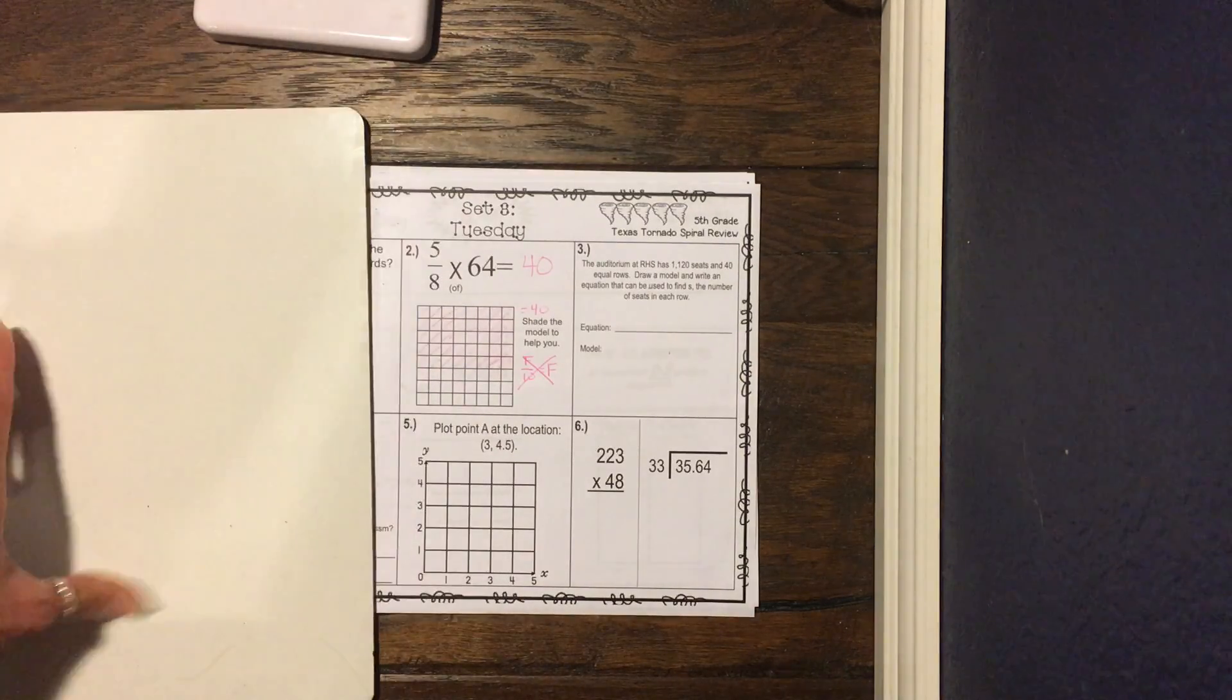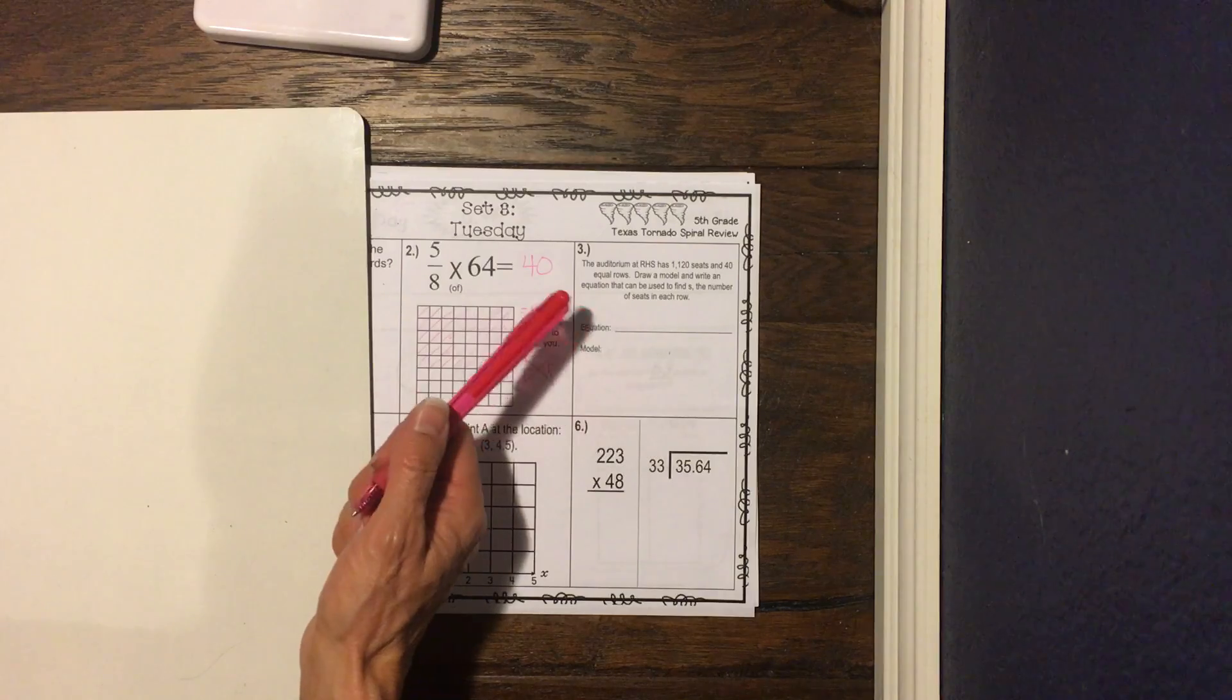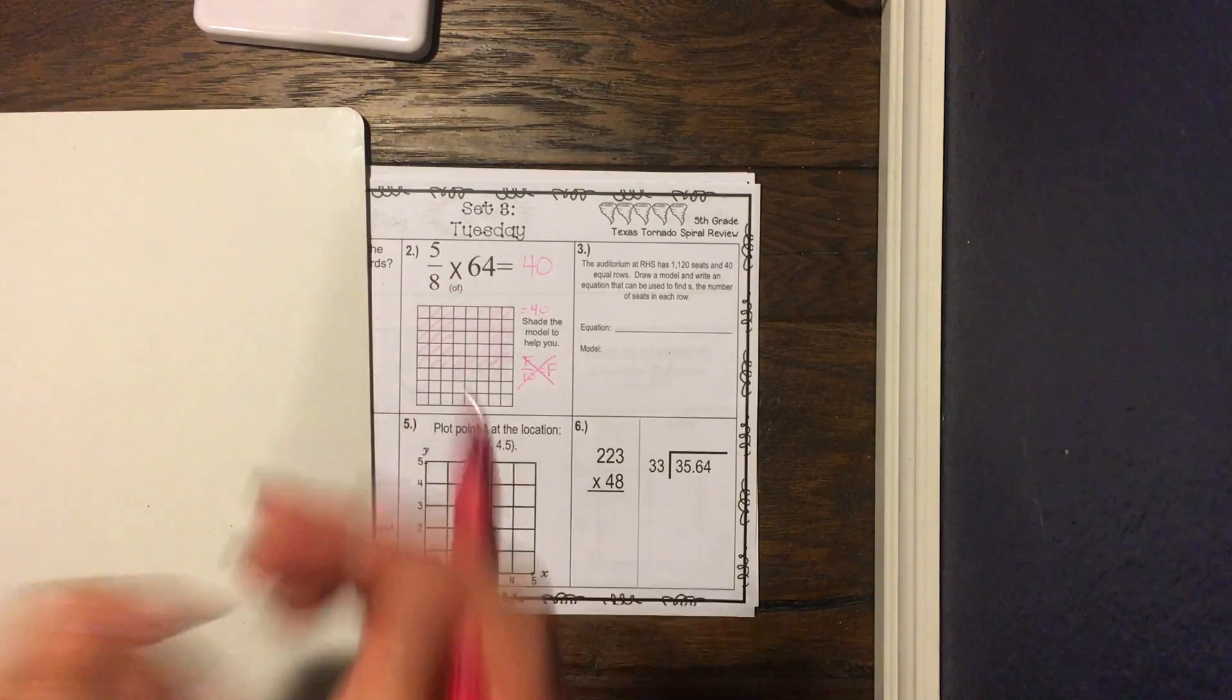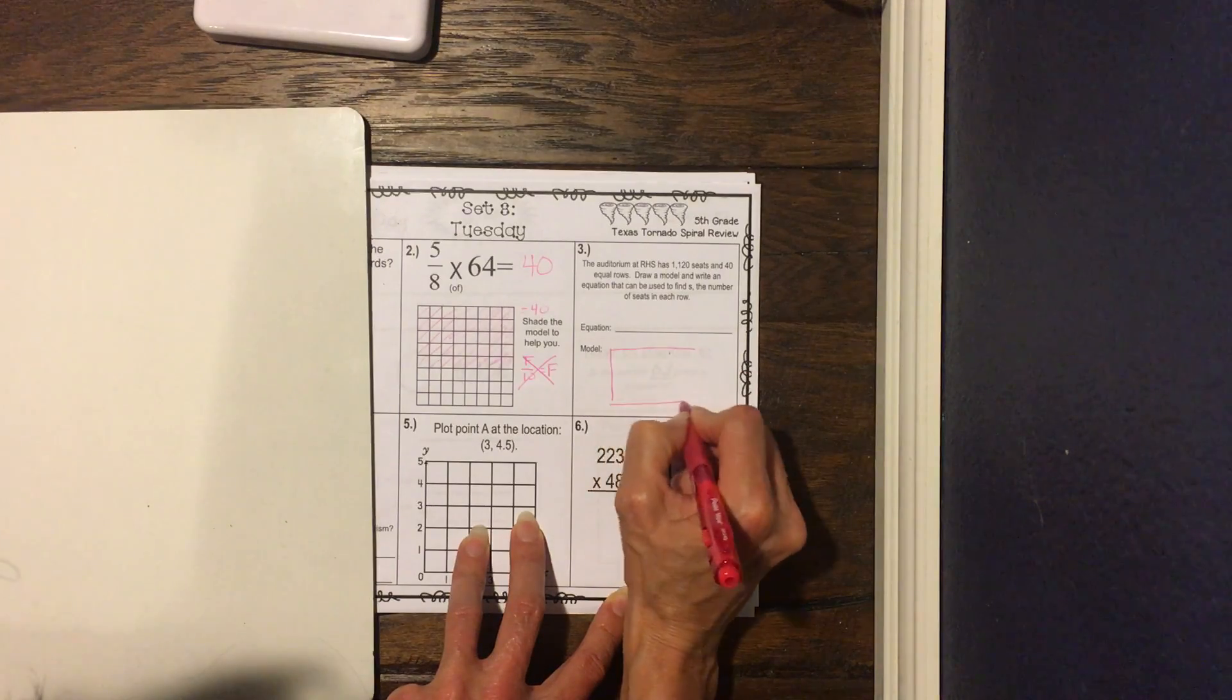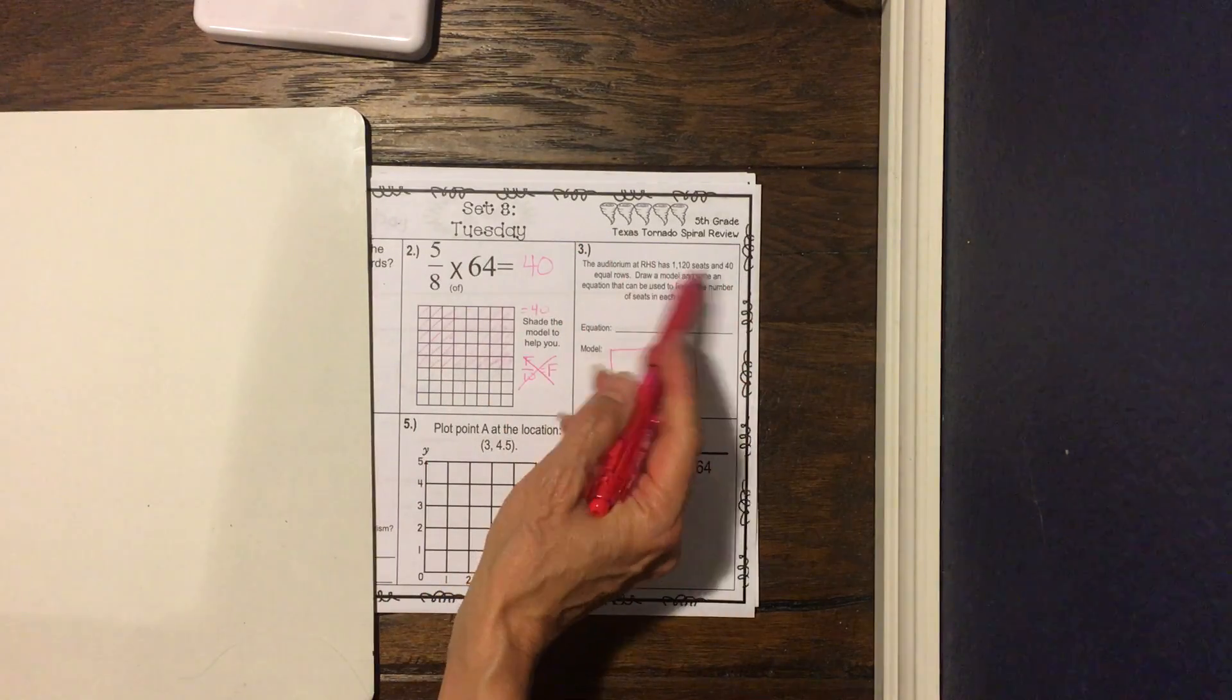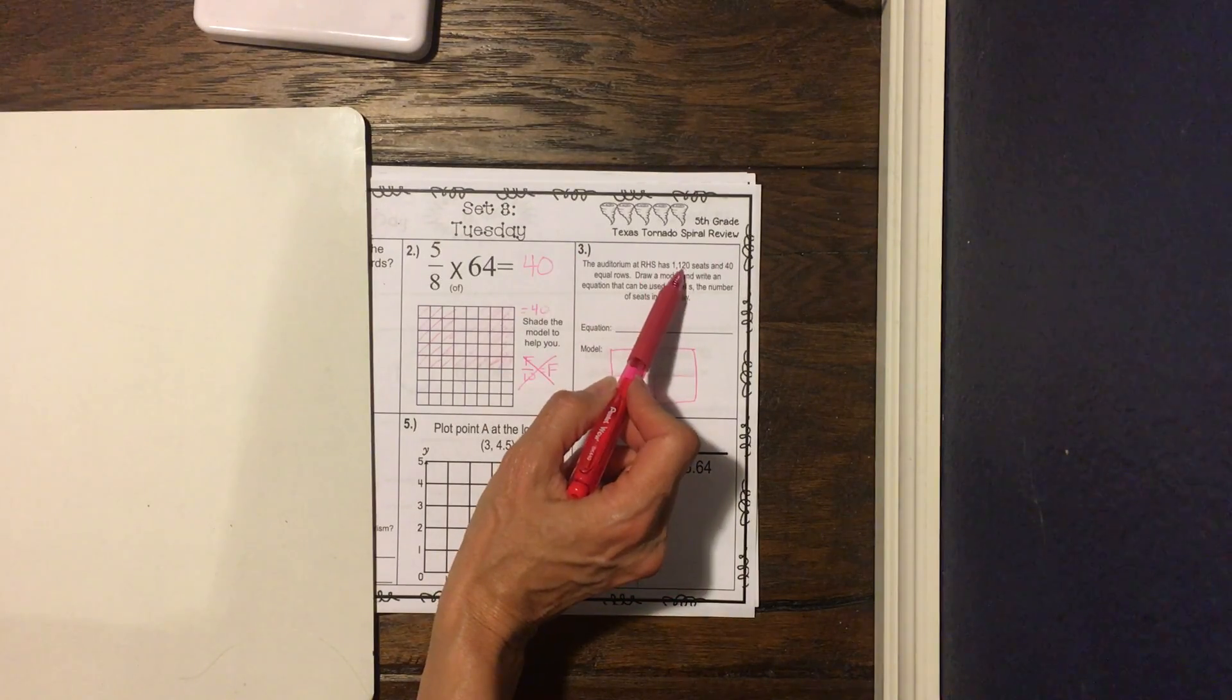All right, so number three. It says, the auditorium at RHS has 1,120 seats and 40 equal rows. Draw a model and write an equation that can be used to find S, the number of seats in each row. Okay, so if we're gonna do this, we're gonna do what I taught y'all instead of drawing a model. We're just gonna do part, part, whole.